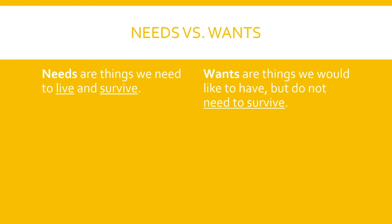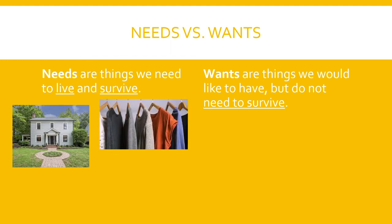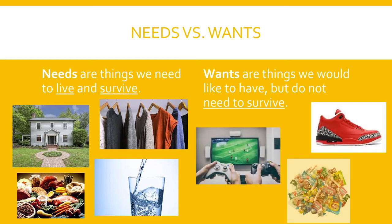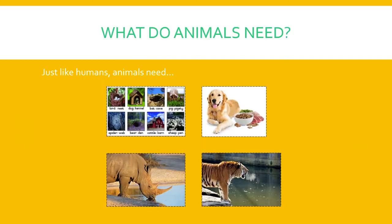The next section we will talk about is needs and wants. Do you remember needs and wants? Needs are things we need to live and survive — if we don't have these things, we could get hurt or maybe even die. Wants are things we would like to have but do not need to survive. I really want some candy, but I do not need it to survive. Just like you and me, animals need a home or habitat, food, water, and air to breathe. Think about what the panda bears need — do they need a home? Do they need food and water? Do they need air to breathe?